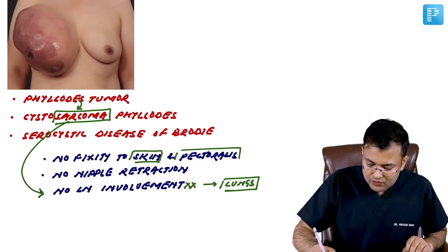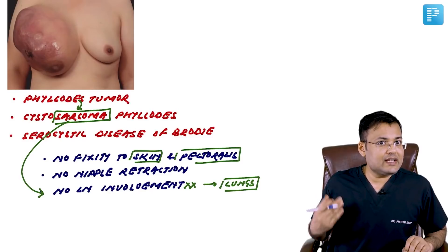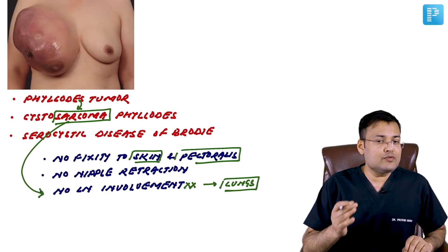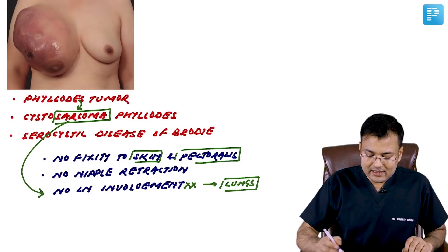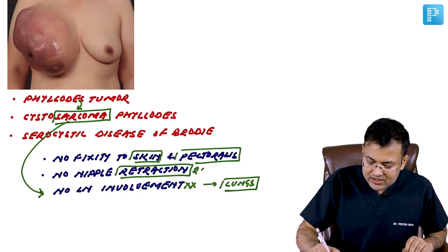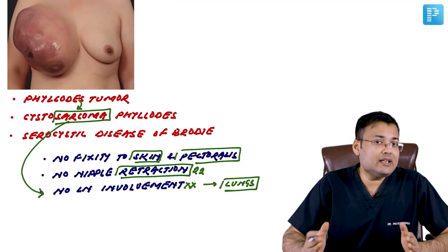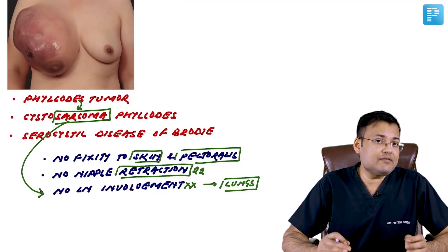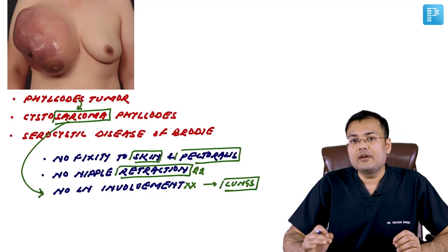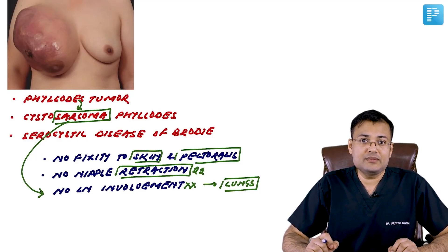Because of hematogenous spread, the most common site of metastasis is the lungs. Other differences: in cystosarcoma phyllodes there is no fixity to the skin and no fixity to pectoralis. Pressure atrophy of skin can occur but there is no fixity. Nipple retraction is not seen. These points help easily differentiate phyllodes tumor from carcinoma breast.